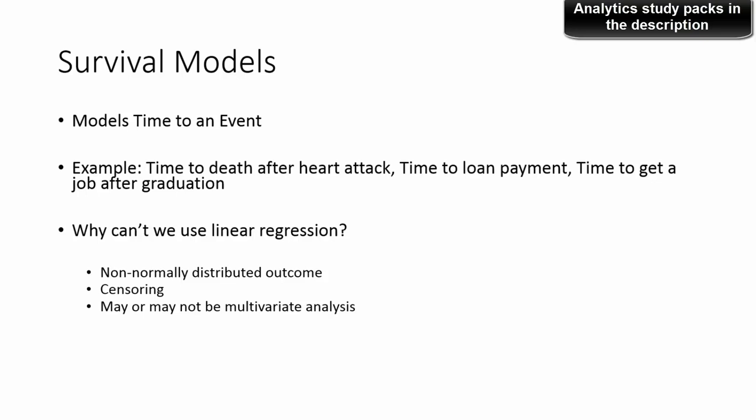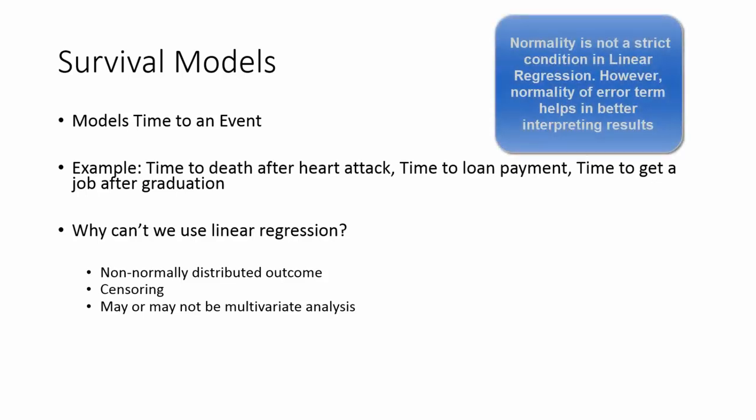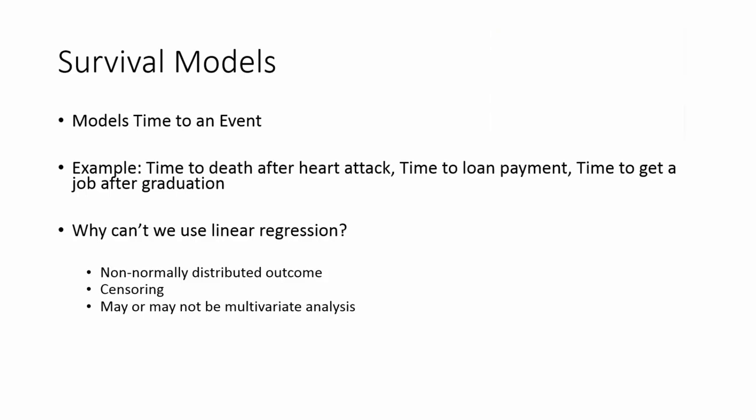The second thing is censoring. Censoring is nothing but partial information. So time to event data sometimes has observations that are not fully observed. We do not have full information about a particular outcome. We cannot take such an observation in linear regression analysis, but we can take it in survival models.